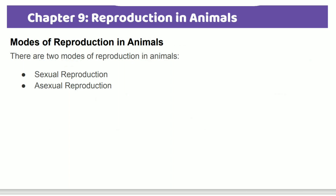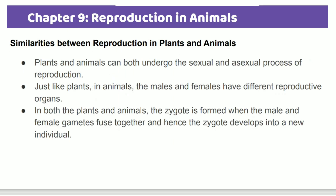There are modes of reproduction for animals. One is called sexual reproduction and the other is called asexual reproduction. Reproduction in plants and animals are similar. Both animals and plants undergo sexual reproduction.